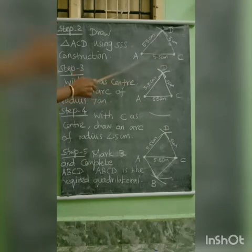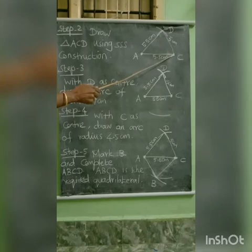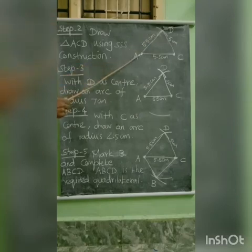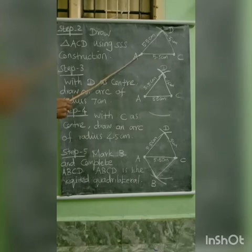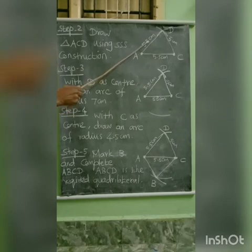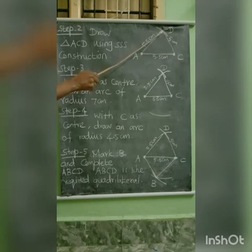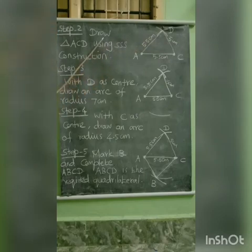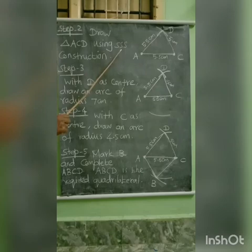The given measurements: one diagonal is 5.5 cm. First to draw the diagonal AC equal to 5.5 cm. Then the given 3 sides: one side length CD is 5 cm. Now take C as center with radius 5 cm to draw an arc. Then take center as A with radius 5.5 cm, draw another arc. Step 2: draw triangle ACD using SSS construction. SSS construction means the given lengths are 3 sides: side, side, side.